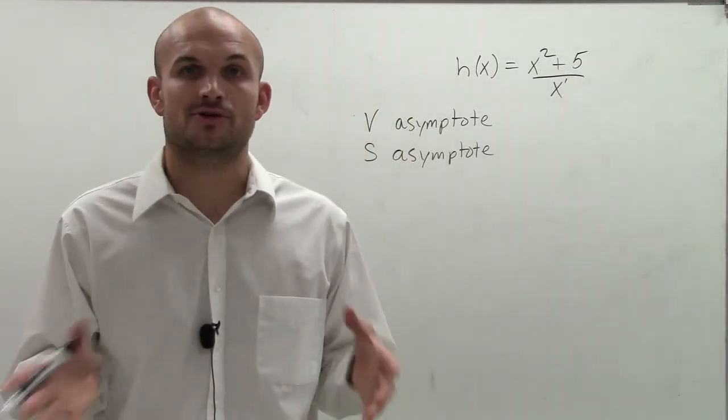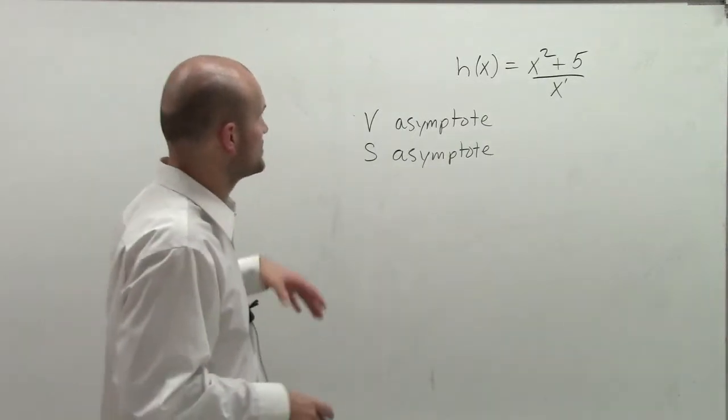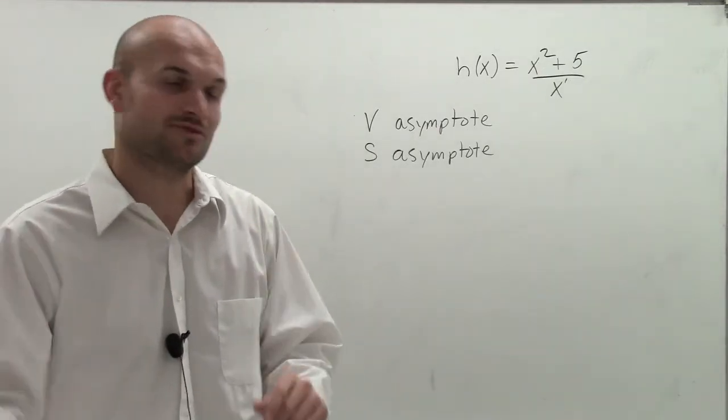So that makes us looking into, what about our slant then? What's our oblique asymptote going to be? So to find that, I'm going to say stop and wait. Let's go and determine what our vertical asymptote is.